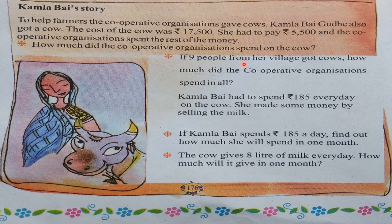Next: if 9 people from her village got cows, how much did the cooperative organization spend in all? Whatever the amount spent by the cooperative organization to purchase 1 cow, multiply that by 9 — that much is what the cooperative organization has to spend to give 9 cows to 9 people of the village.